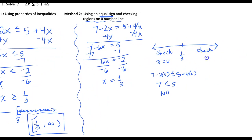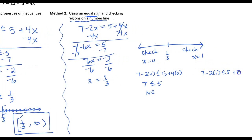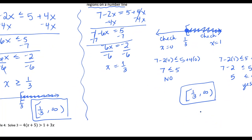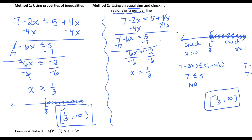Checking x equals 1 on the right: 7 minus 2 times 1 is 5, and 5 plus 4 times 1 is 9. Is 5 less than or equal to 9? Yes, so we shade on that side. We decide open or closed circle based on the original — because we had the equal-to line, we include 1 third. So again, we get bracket 1 third comma infinity as our answer. This second method is useful because students often forget when to flip the inequality symbol, and it also helps identify tricky cases where there's no answer or all answers.